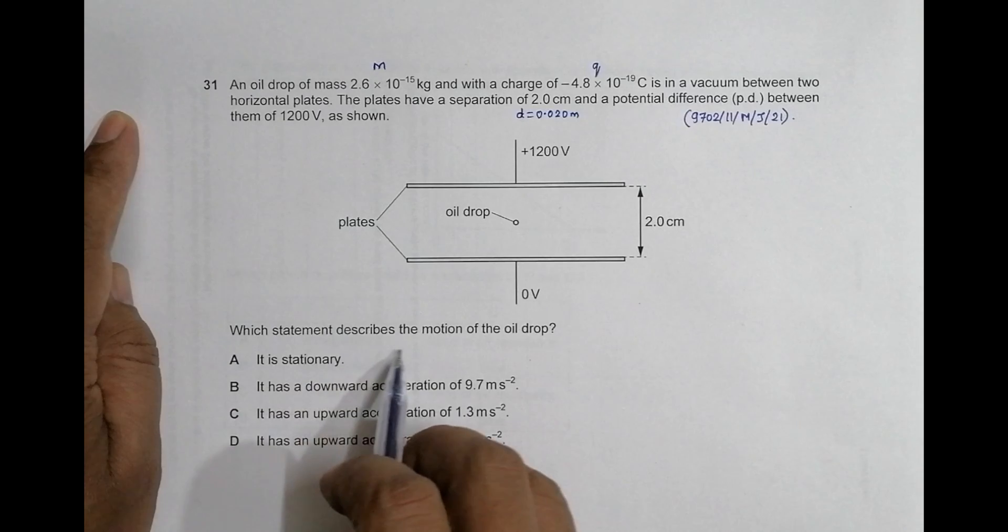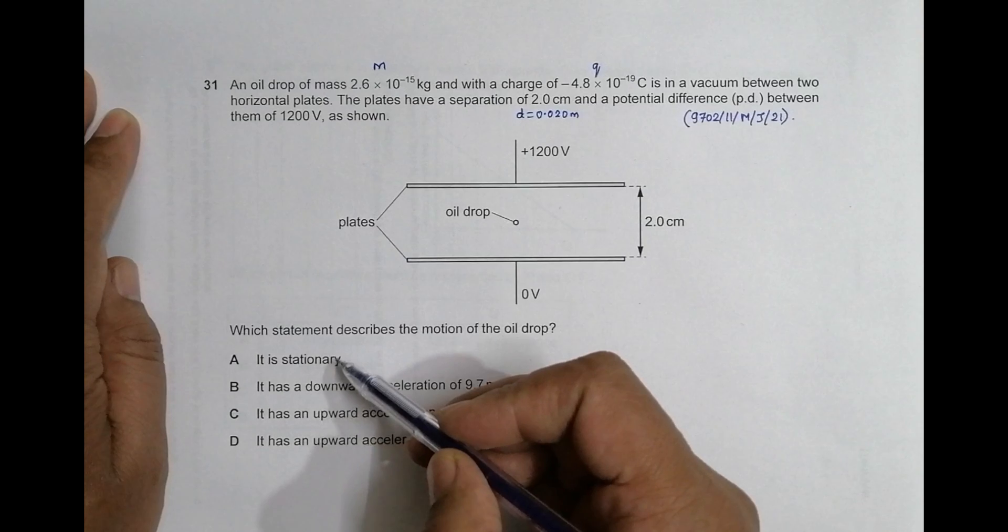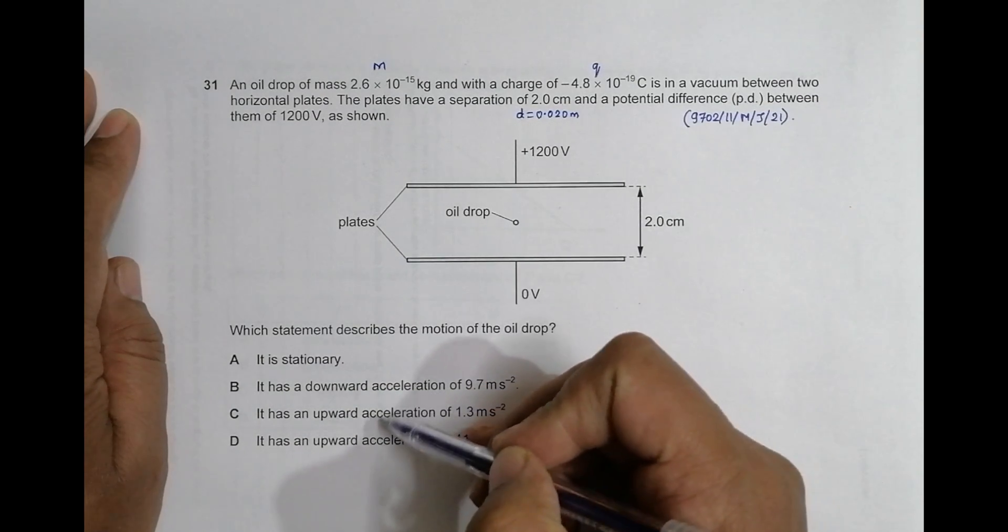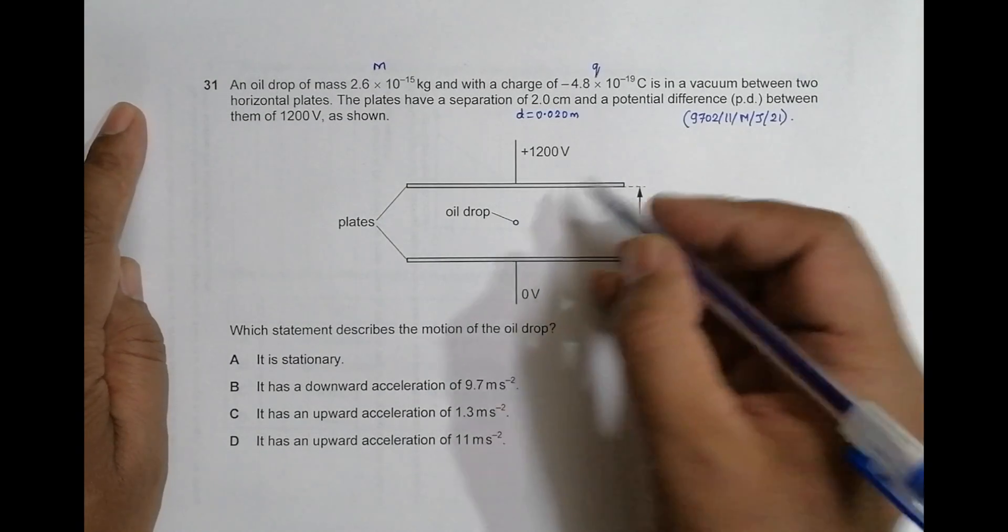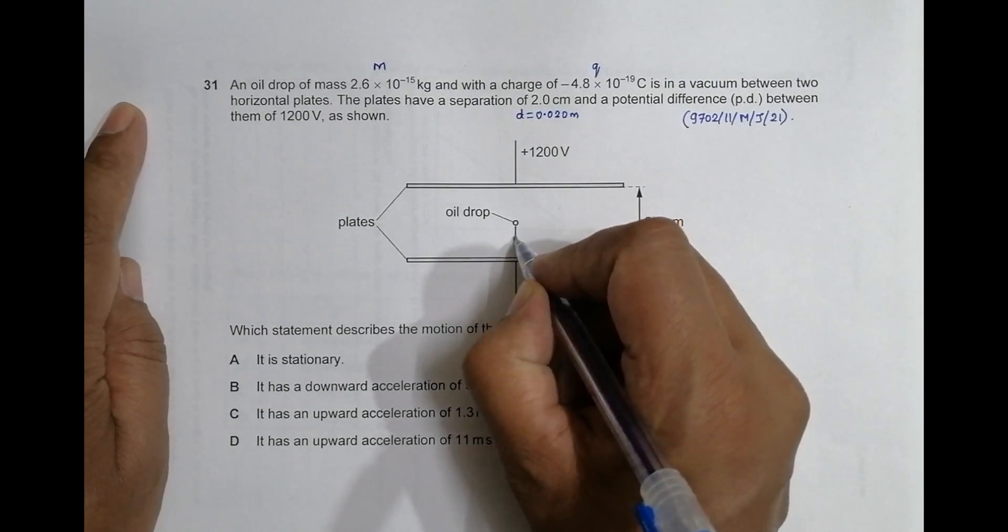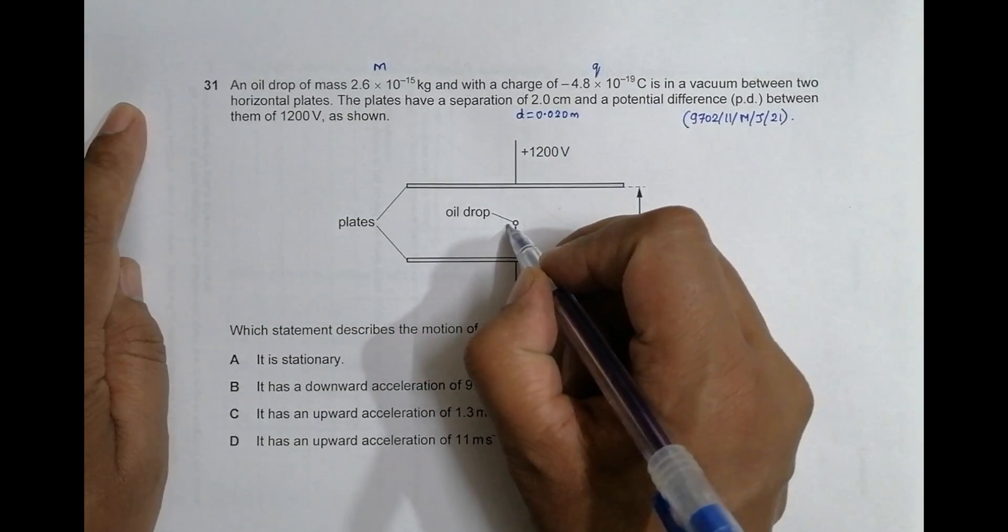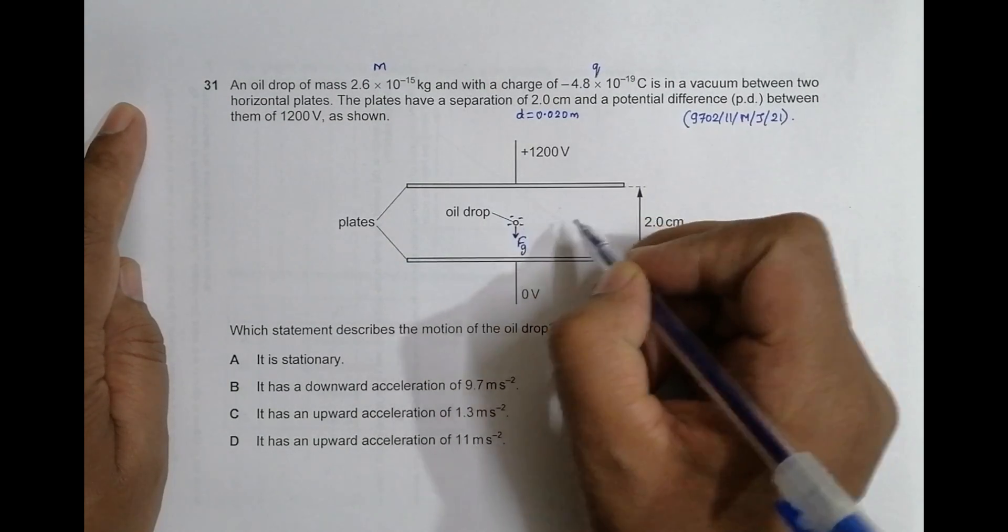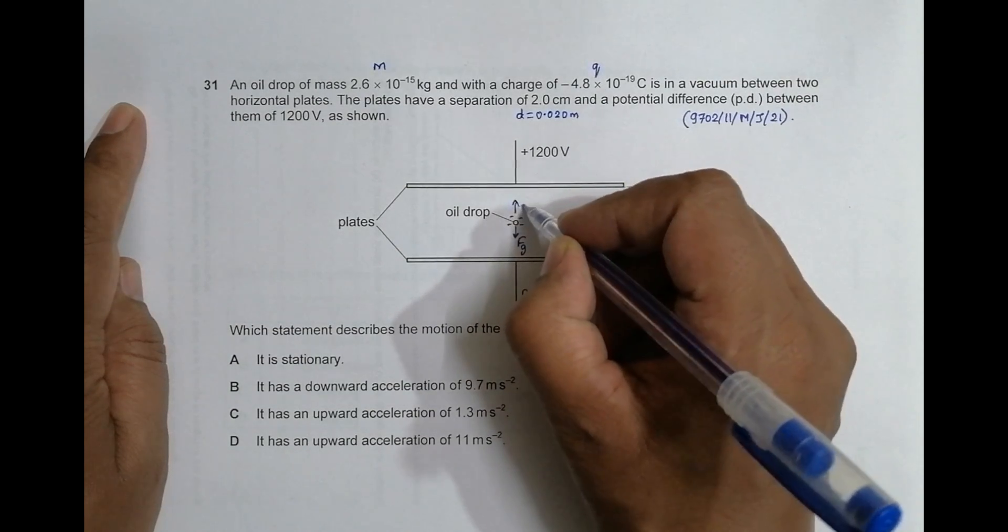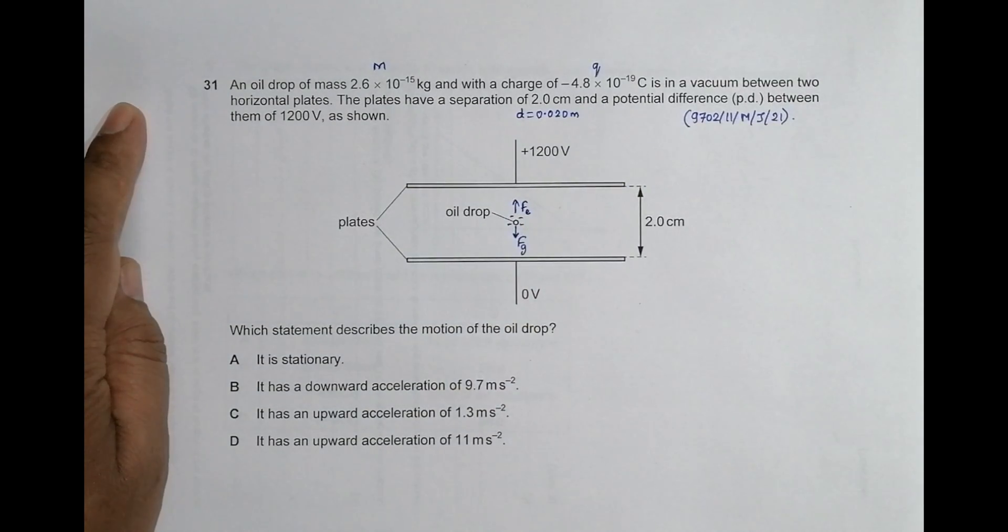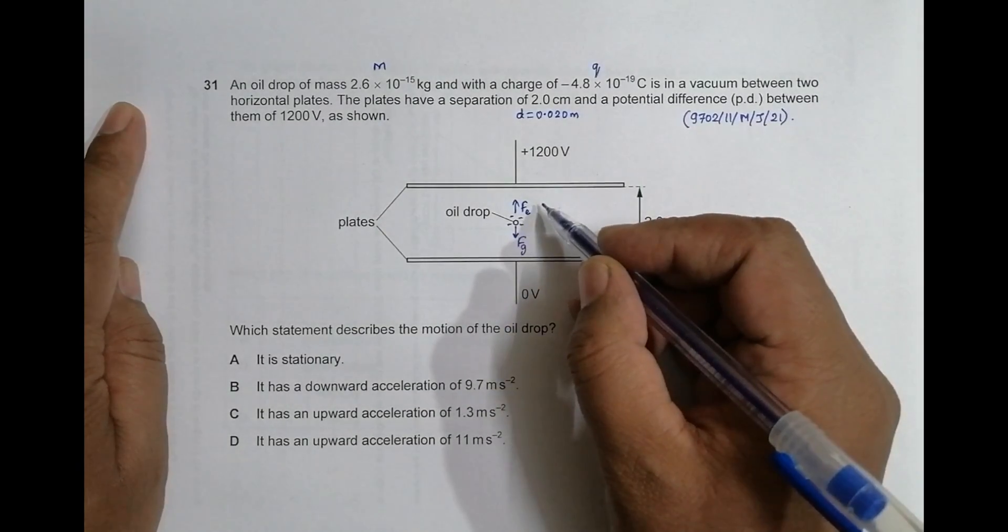Which statement describes the motion of the oil drop? The choices given are stationary, downward acceleration, and two upward accelerations. For that, we first have to find the nature of forces here. The force of gravity will pull it down like this, FG. And since it is negatively charged, this electric field will exert electric force somewhat like this, FE.